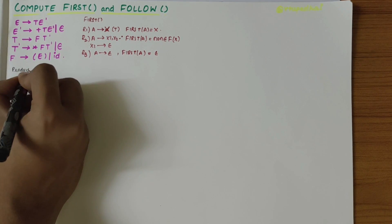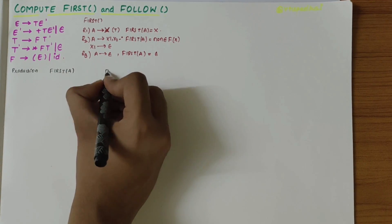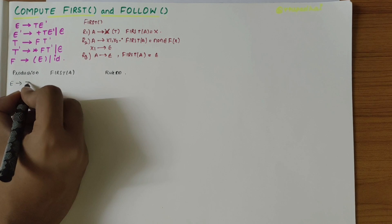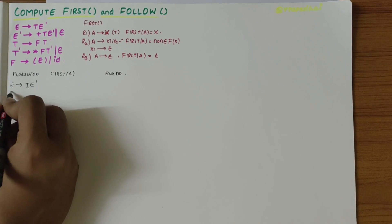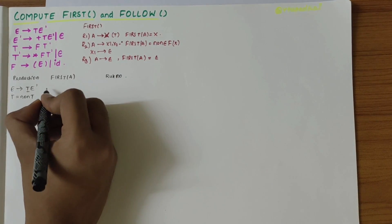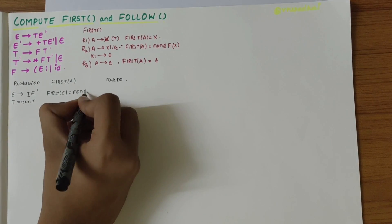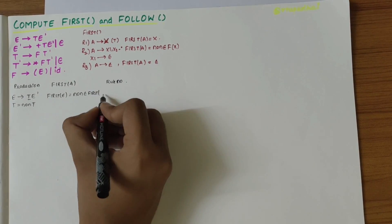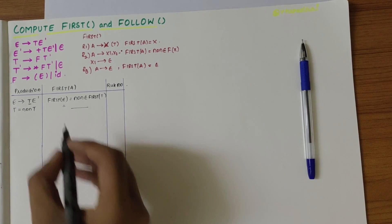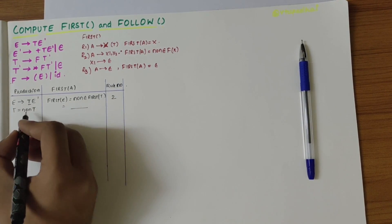Let's write all the productions one by one and compute the FIRST, mentioning the rule number. For the first production E derives TE', here T is a non-terminal, so we apply rule two: first of E is equal to non-epsilon first of T. We don't know first of T yet, so we keep it as non-epsilon first of T.